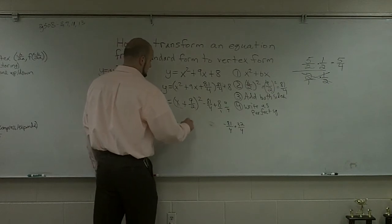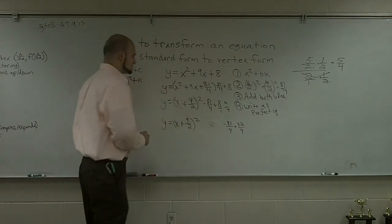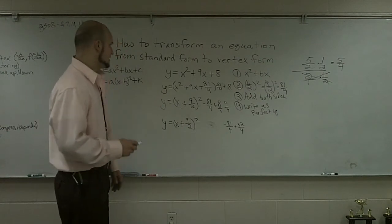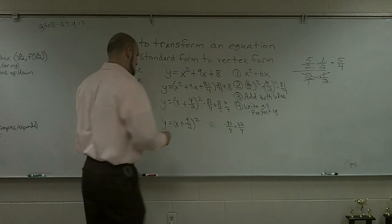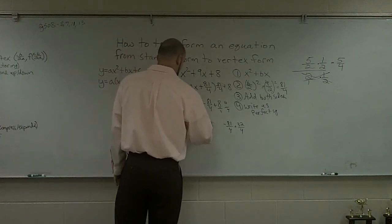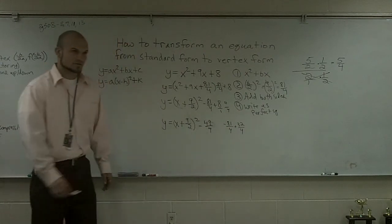So y equals x plus 9 halves squared, and then we're going to have minus 49 over 4.